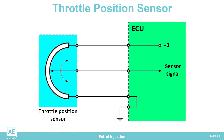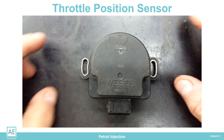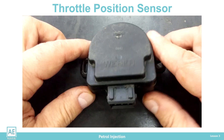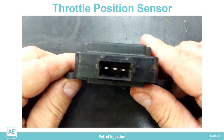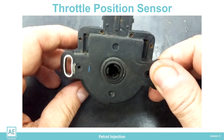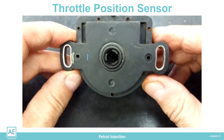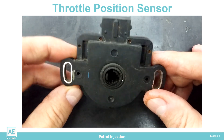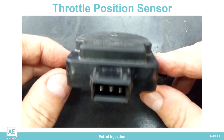The sensor potentiometer is a variable voltage divider where the output voltage depends on the slider position. This type of throttle position sensor plays an important role in the electronic control of engine operation. A sensor failure can disrupt the operation of the injection system.